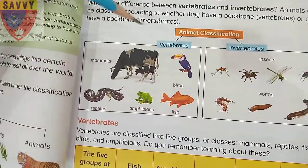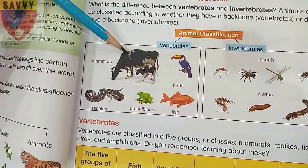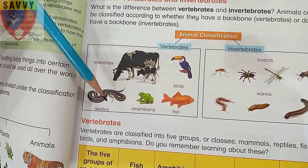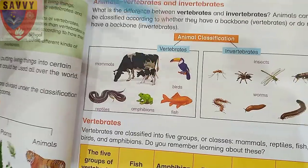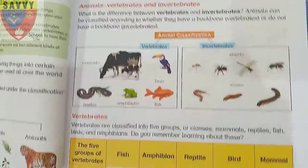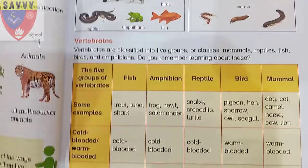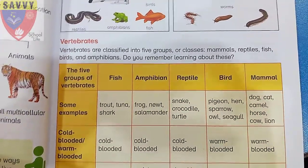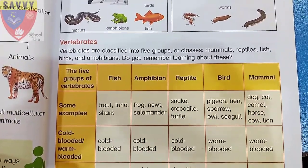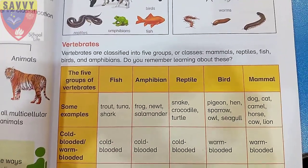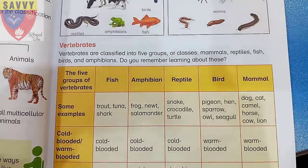Some examples of vertebrates include mammals, birds, reptiles, amphibians, and fish. Examples of invertebrates include insects and worms. Vertebrates are classified into five groups and classes: mammals, reptiles, fish, birds, and amphibians.